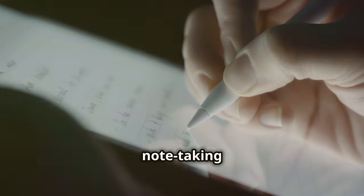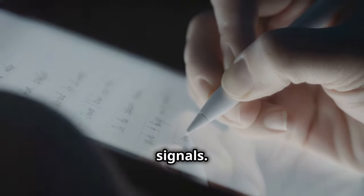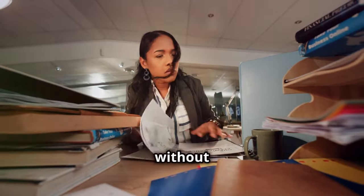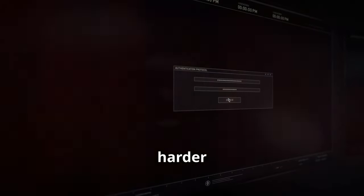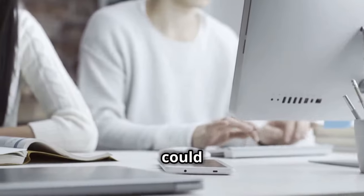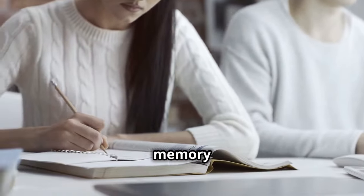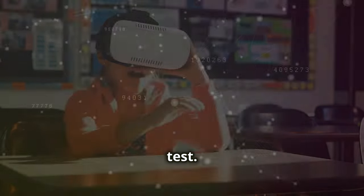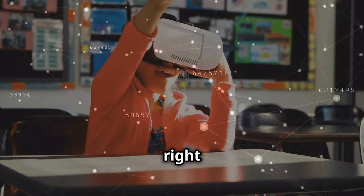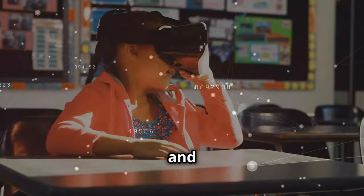Digital note-taking doesn't send the same strong signals. It's like hitting the save button without organizing anything. The information might be in there somewhere, but it's harder to find later. This could be why the pen and paper group in the Tokyo study did so much better on the memory test. They were giving their brains the right signals to learn and remember.